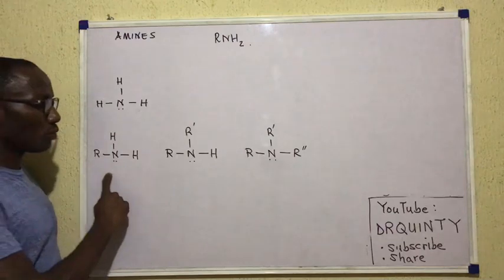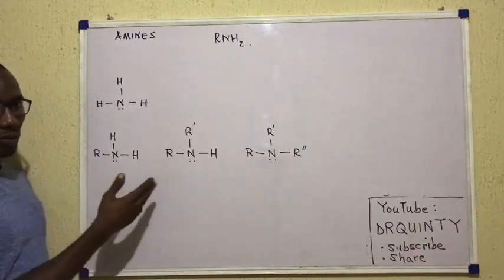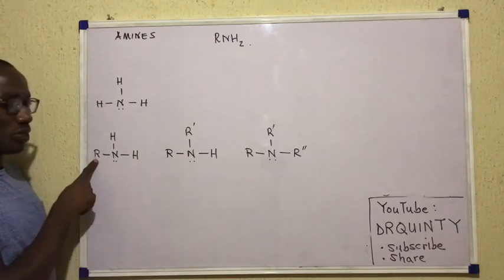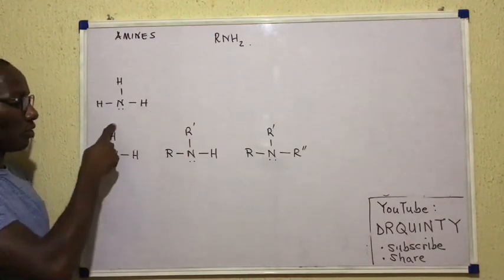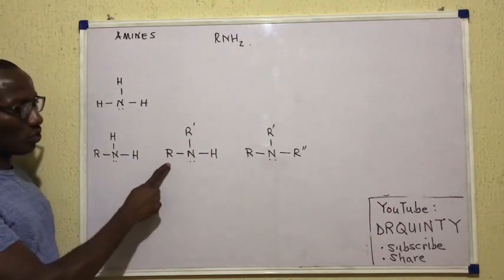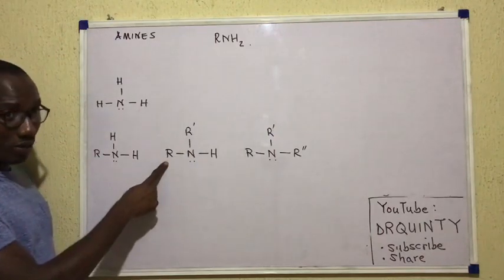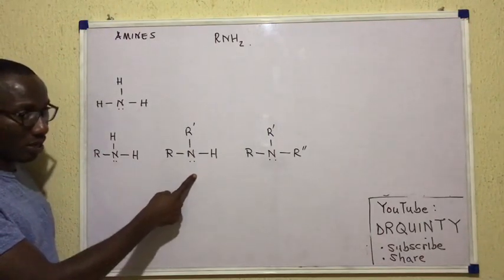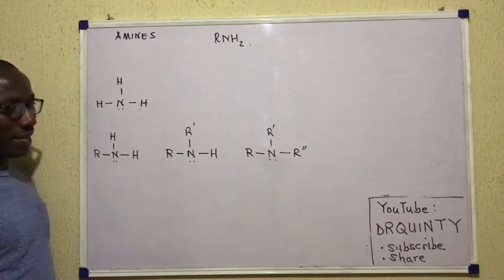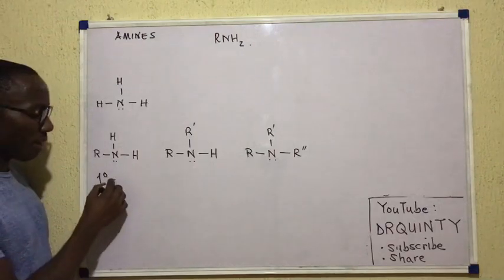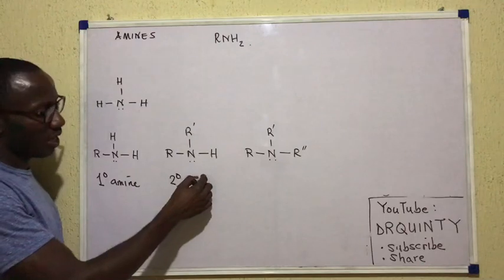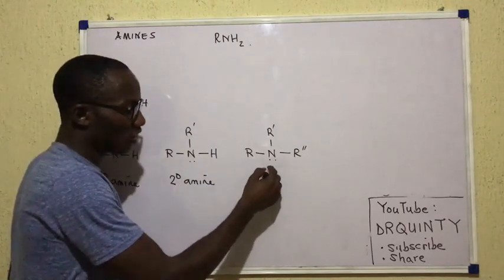Now this ammonia, if you compare it with the compounds down here, the formulas I have written under, you see that in this case only one hydrogen has been replaced and then the other two hydrogens are intact. Such is an amine. In this other case, we have two hydrogens already replaced — that's still an amine. Then in that case, we have all hydrogens replaced. So those are amines. But we call this kind of amine a primary amine. Then we call this other one a secondary amine and we call the third one a tertiary amine.